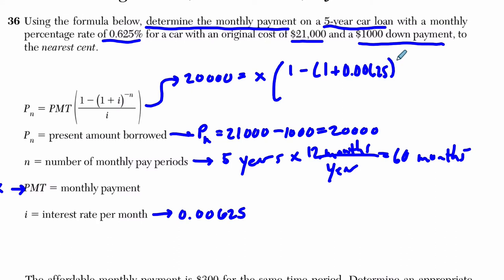to the power of negative 60, that over i, which is 0.00625.